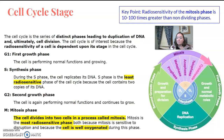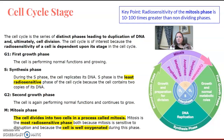The mitosis phase is the main one to pay attention to. This is where the cell divides into two cells in the process called mitosis. It is the most radiosensitive phase, and the cell is well oxygenated — which we know from Bergonié and Tribondeau means more sensitive. We'll get to the specific sub-phases like prophase, metaphase, anaphase, and telophase in later slides.